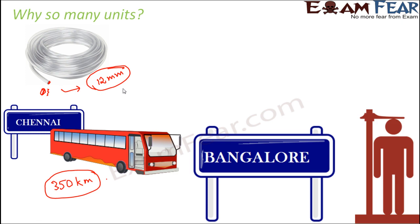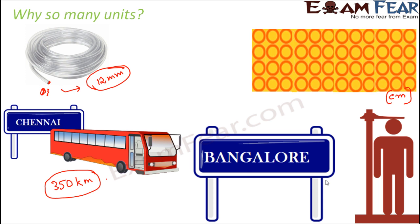Take another example: when you measure your height, centimeter is very commonly used — for example, 176 centimeters or 180 centimeters. When you measure the length of cloth, meters are used, because you wouldn't go to a shop and ask for 5 kilometers of cloth. So based on how much length you are measuring, the respective unit is used.